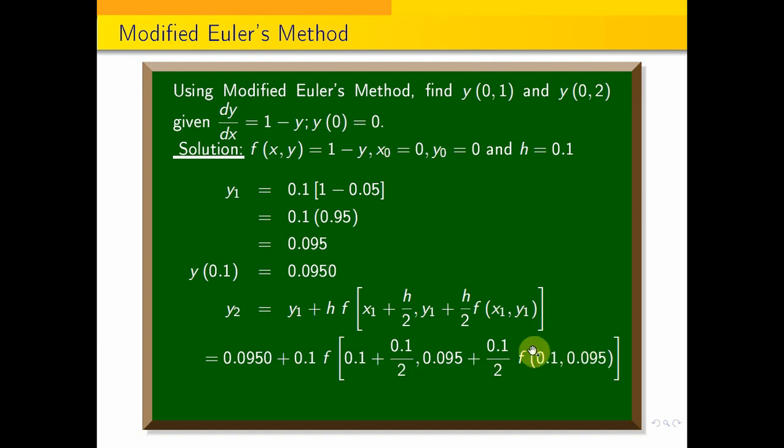Now, what is the value? First, the f of x, y is 1 minus y. So, f of x1, y1 equals 1 minus y1. So 1 minus 0.0950, y1, that equals 0.9050.